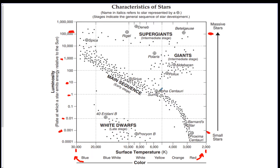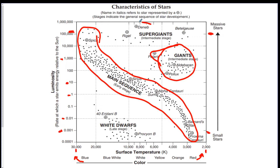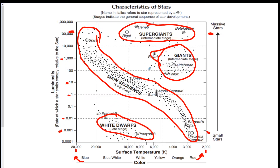Now that we know about the axes, let's talk about what's happening in the middle. All the black dots are stars. Most stars — about 75% to 90% — are on the main sequence, which is most of the black dots. Then you have the giants, the supergiants up at the top, and the white dwarfs down at the bottom. You want to look at this as those distinct groups.